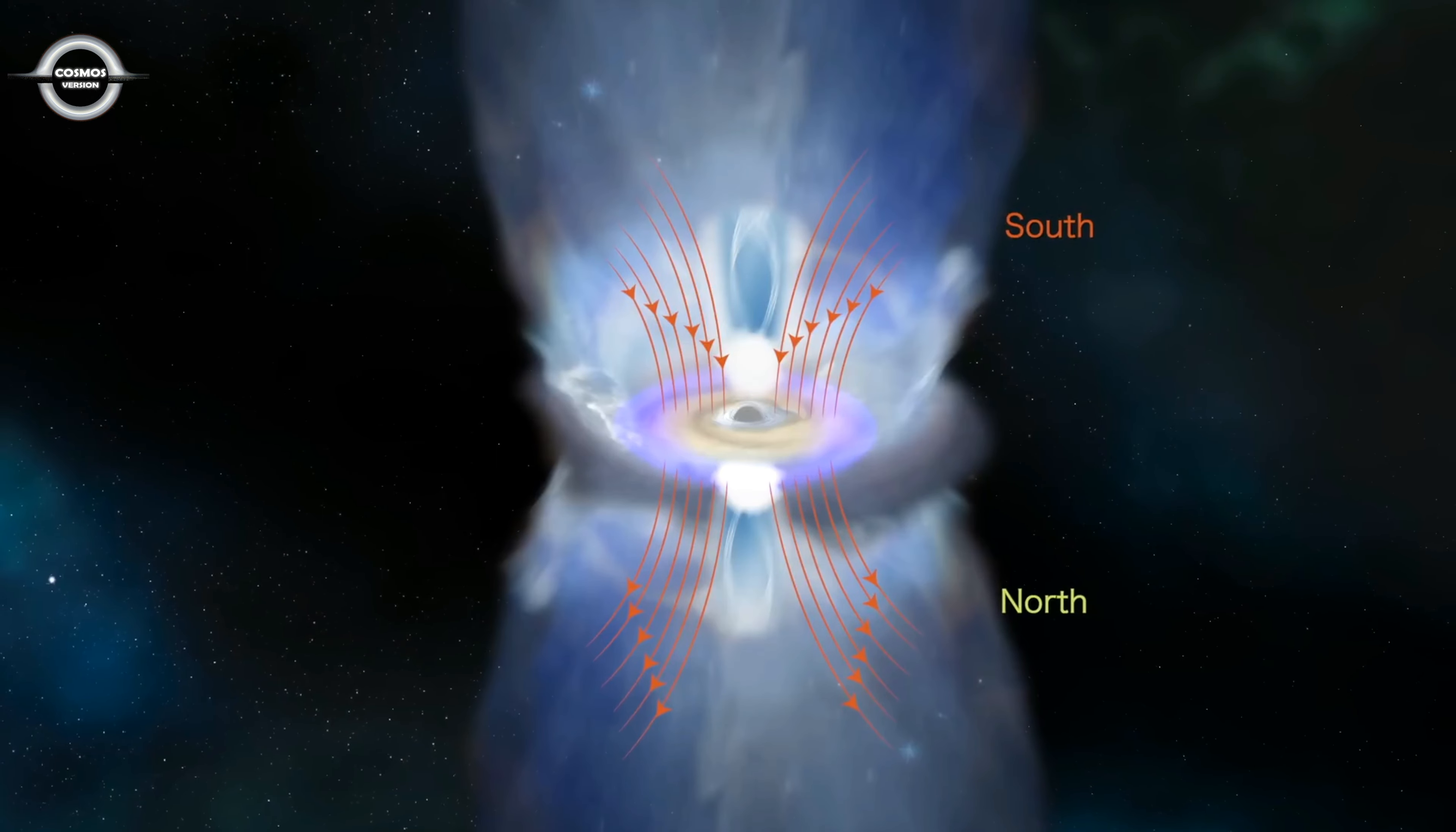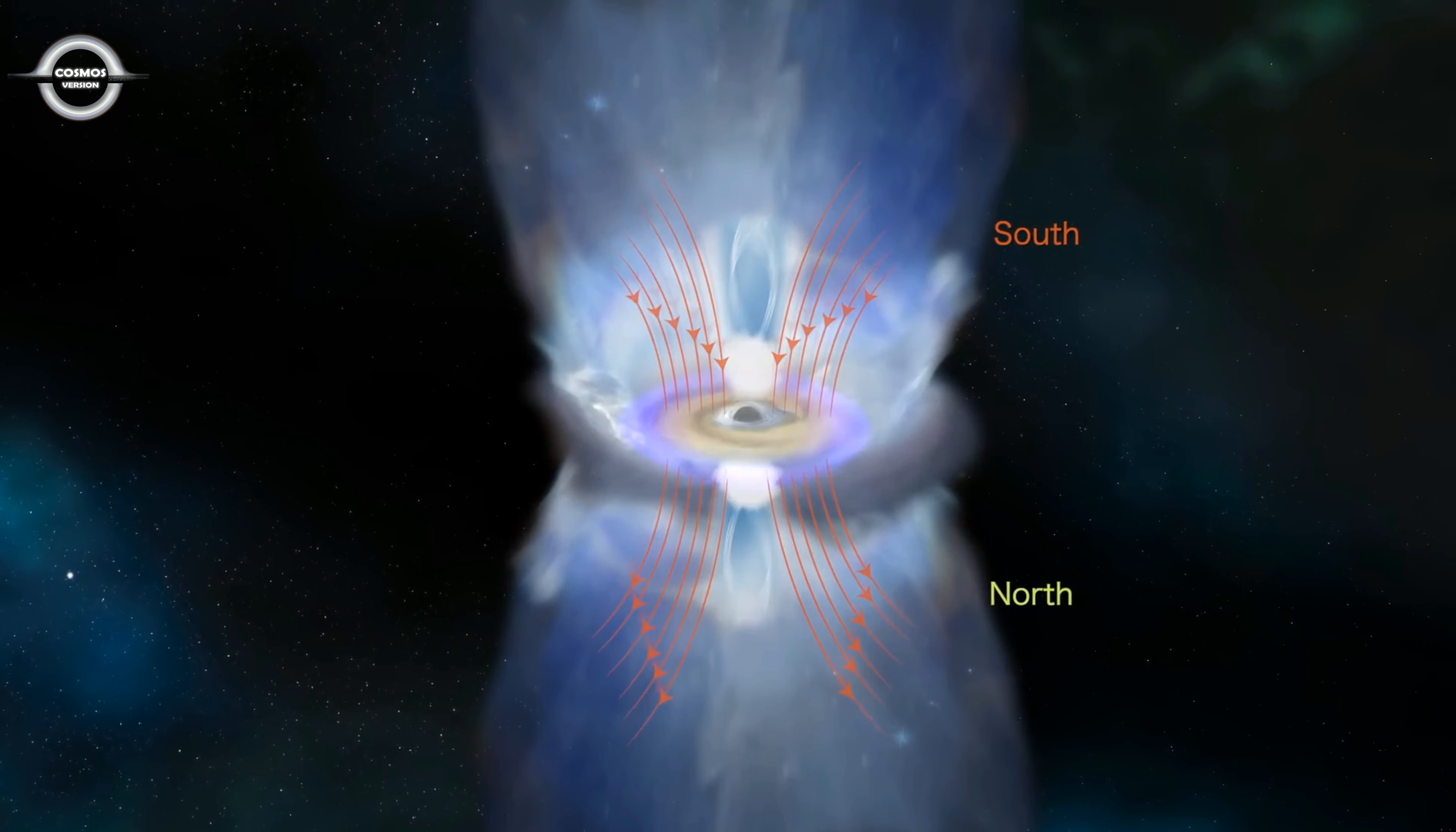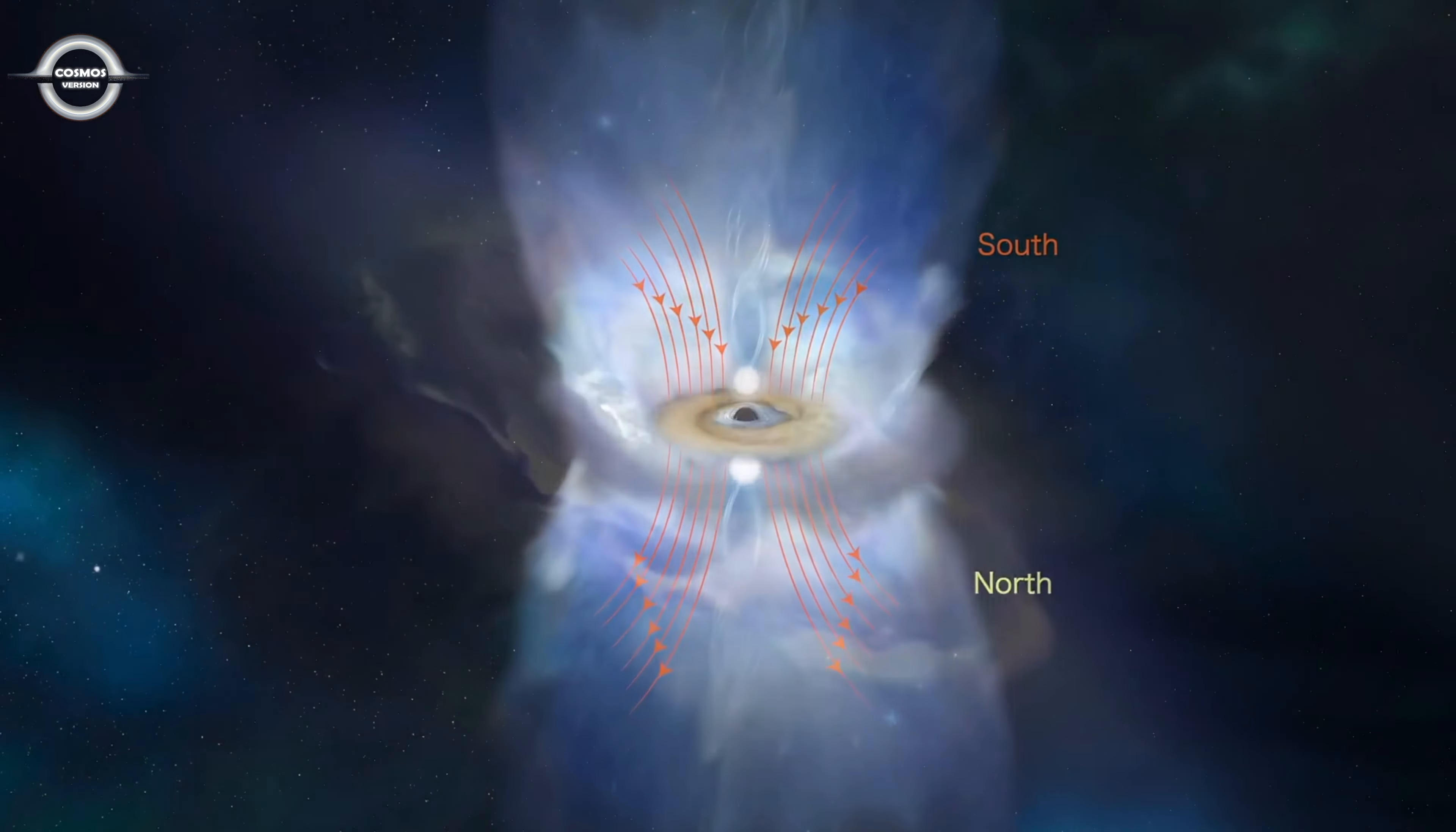Finally, the corona and disk returned to their states before the flare, now with a flipped magnetic field. Rapid changes in UV and visible light have only been observed in a few dozen active galaxies like this one.